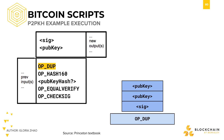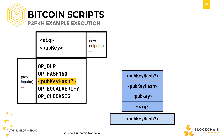OP_DUP will duplicate the top item on the stack. OP_HASH160 hashes the previous item on the stack, first with SHA-256 and then with RIPEMD-160. Next, the pubkey hash in the angle brackets is the actual pubkey hash specified by the previous transaction output. We put this on the stack as well.